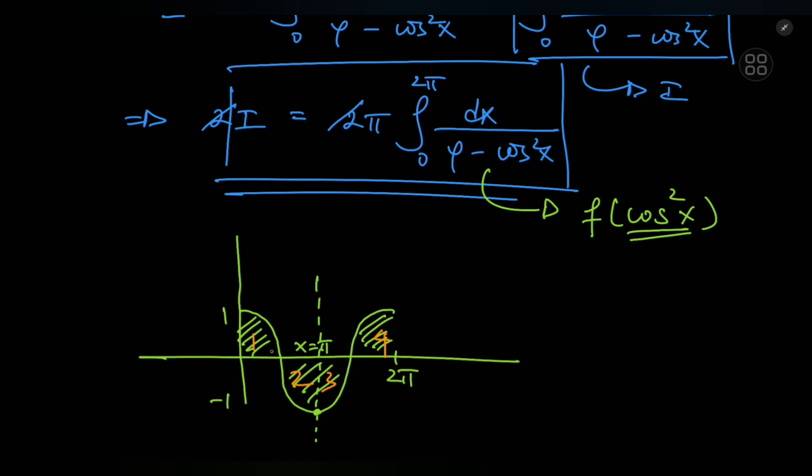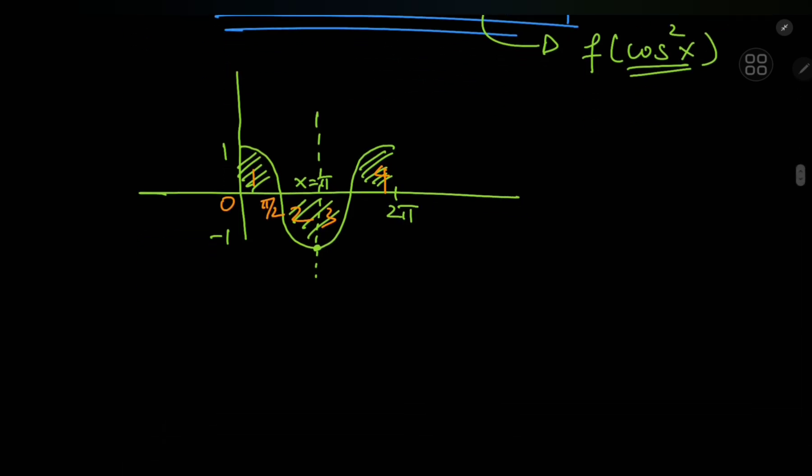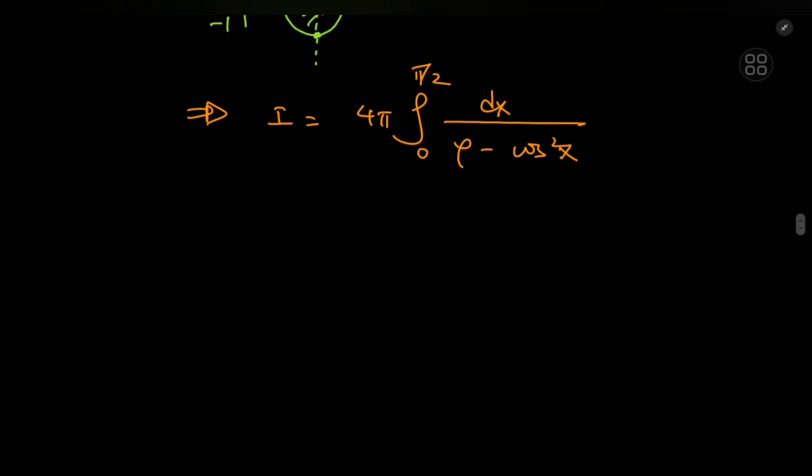So that means instead of integrating from 0 to 2π, we could just integrate from 0 to π by 2 and multiply the result by 4. So this implies that I can write i as 4π times the integral now from 0 to π by 2 of dx divided by φ minus the squared cosine of x. And this is a really nice structure to work with because the limits of integration are a lot more familiar. They're probably one of our favorite limits to work with, 0 to π by 2. That's a really nice interval to work with. Now how exactly do I approach the integral now?